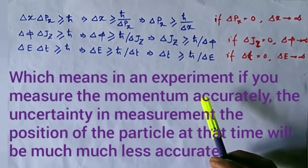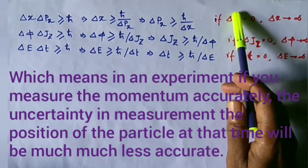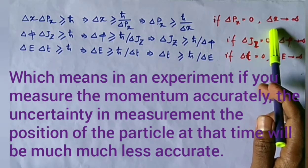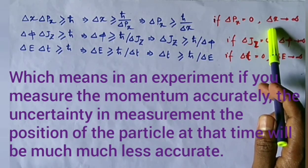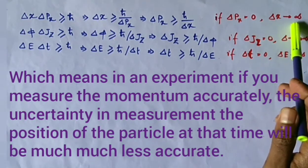Which means in an experiment, if you measure the momentum of a particle accurately, the uncertainty in measurement of the position of the particle at that time will be much much less accurate.